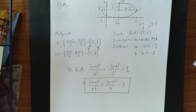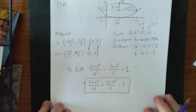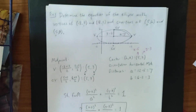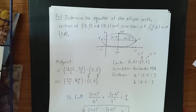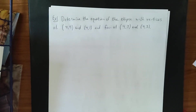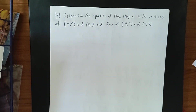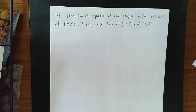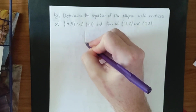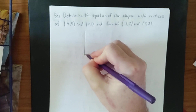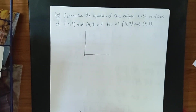That's a decent first example for a horizontal major axis. Let's bump up the difficulty a bit by working with different graphical aspects — this time we'll determine the equation of an ellipse given two vertices and two foci.